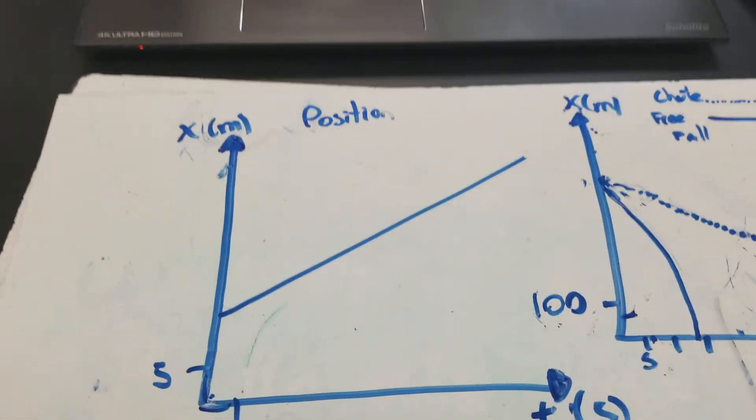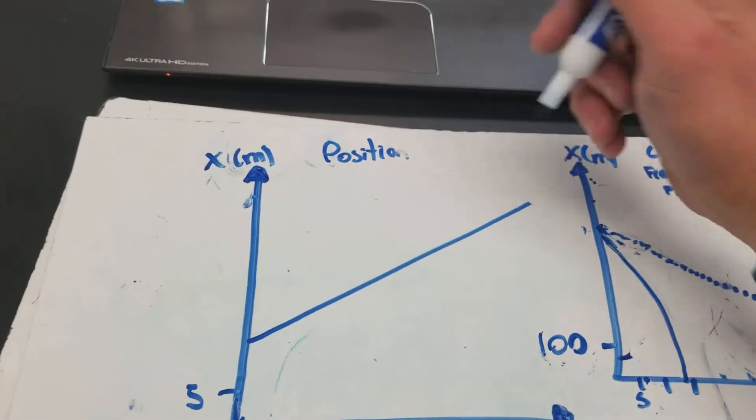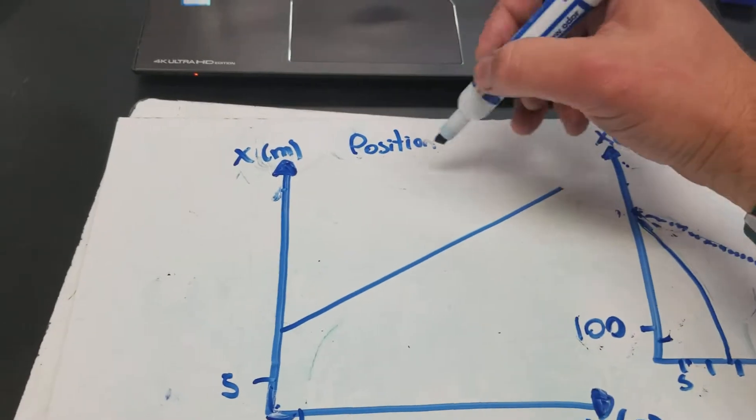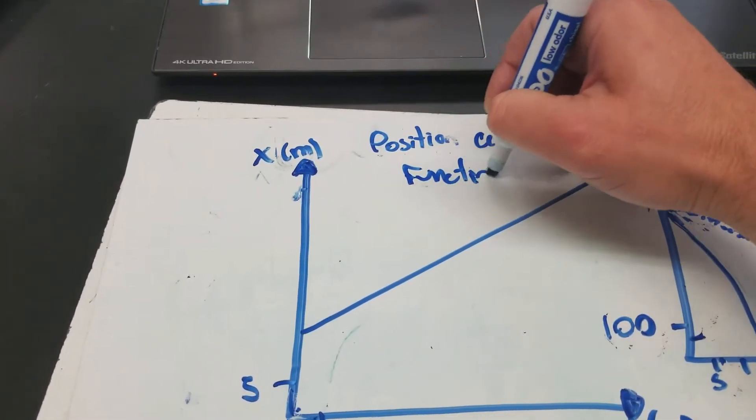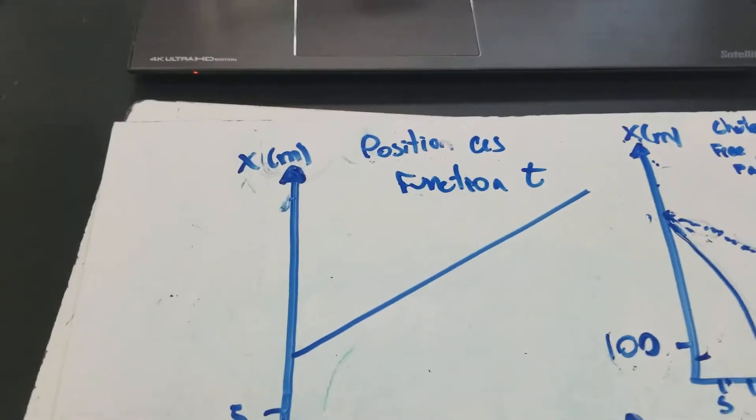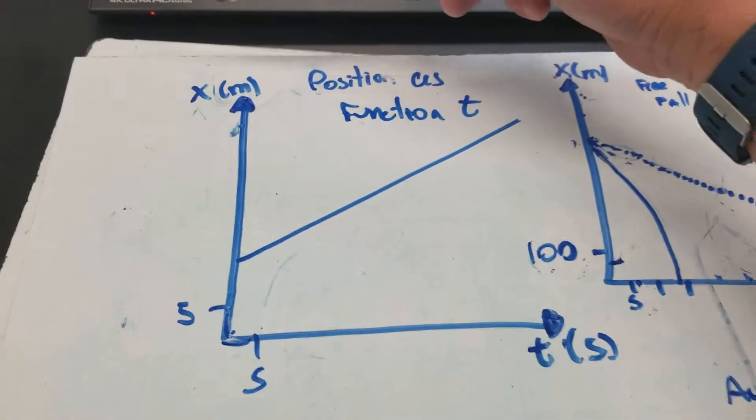So on any graph, you should always include a title so that the person who's looking at it knows exactly what it is when you look at it. For example, this one is position as a function of time, right?